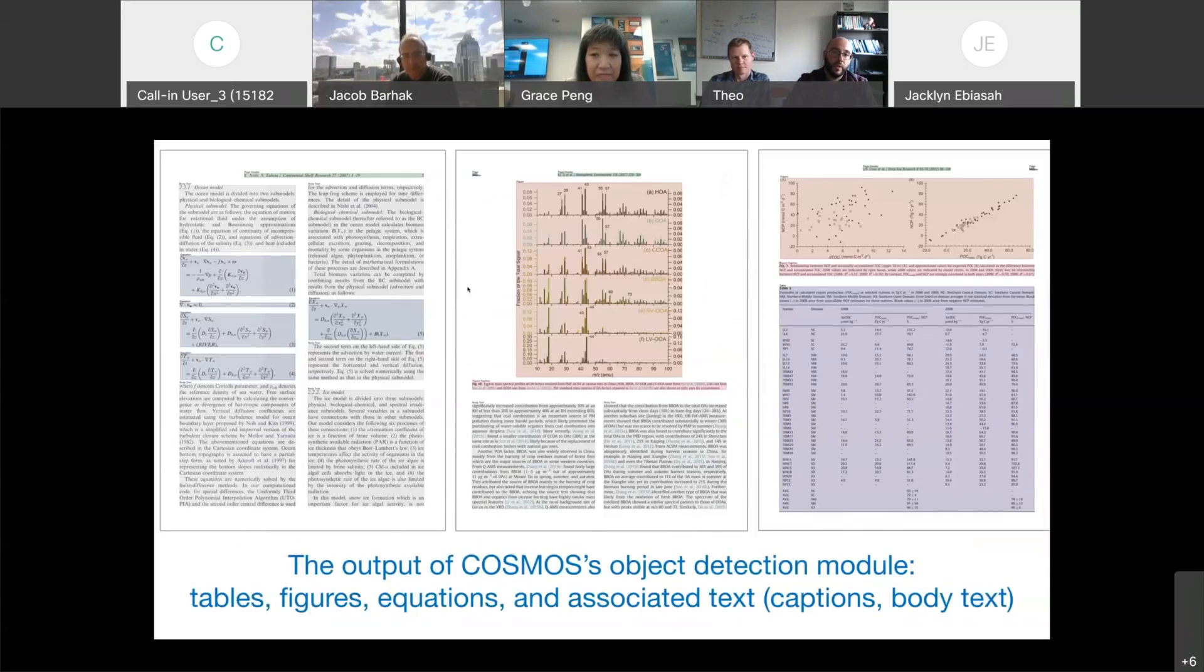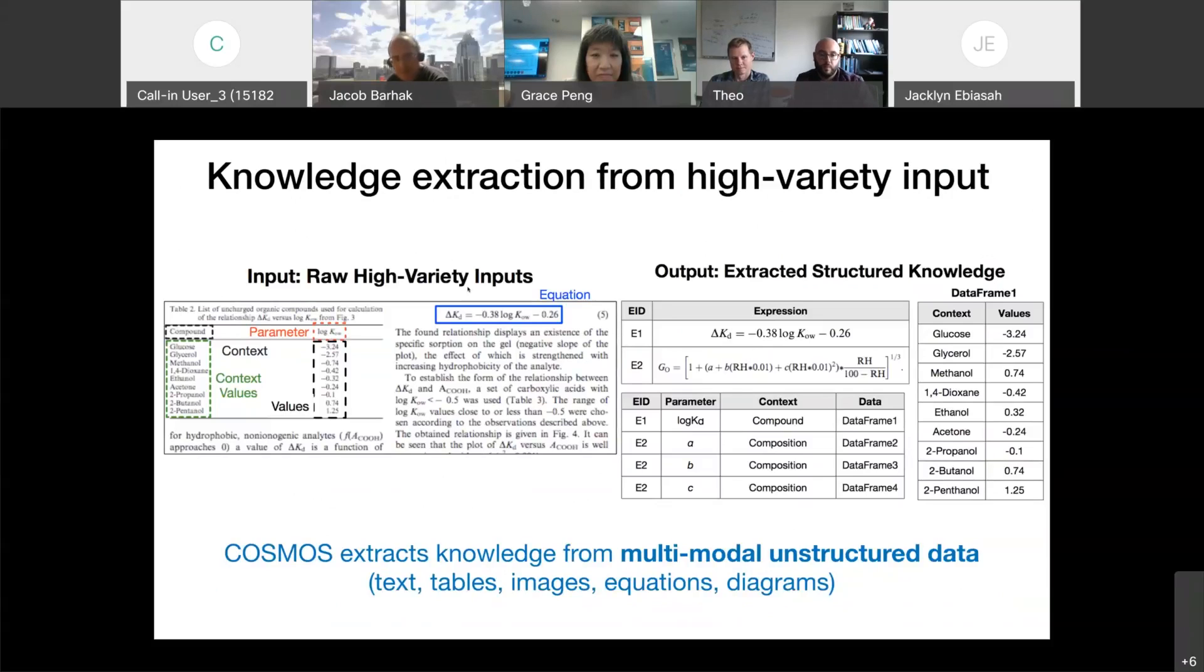Given this output, the goal is to go from the segments to something more structured so that we can store that and provide data to downstream analytics. So for instance, if I have an equation and going back to our previous examples, we have an equation and the parameters and the context. Our goal, the goal of Cosmos is to extract knowledge from this multimodal data that we have recognized and extract structured representations such as the ones shown here.